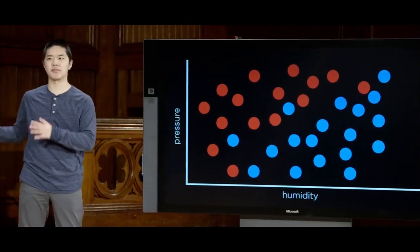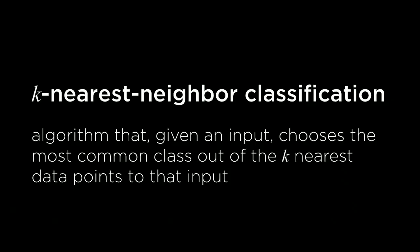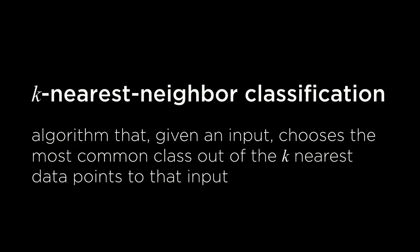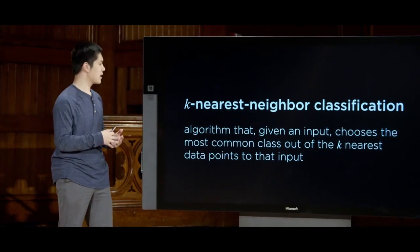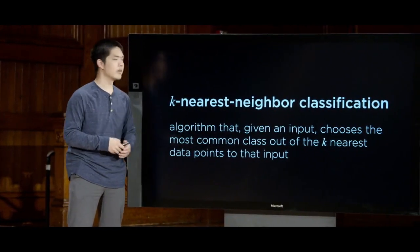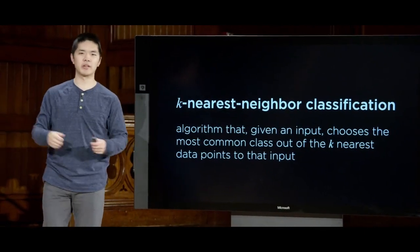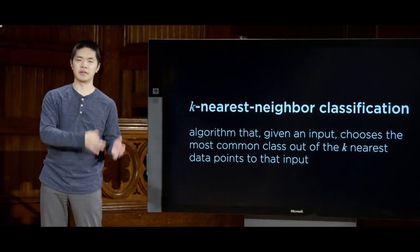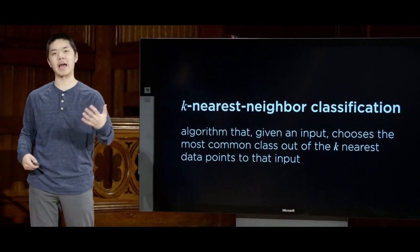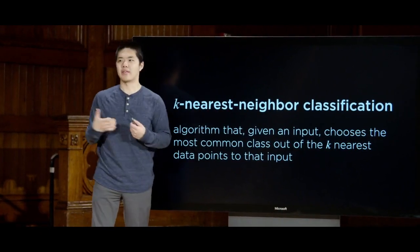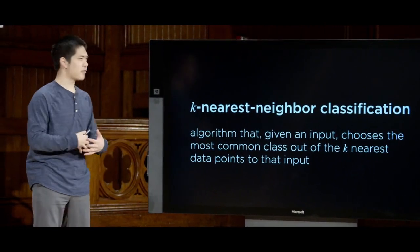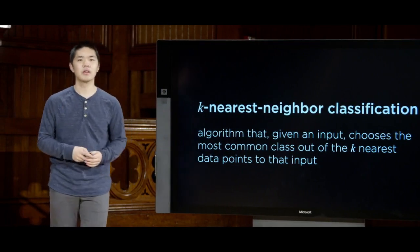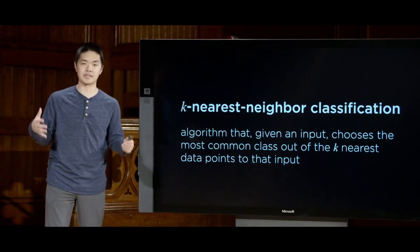There's a variant on nearest neighbor classification known as the k-nearest neighbor classification algorithm, where k is some parameter for how many neighbors we're going to look at. With one nearest neighbor, you just pick the one nearest neighbor and use that category. But with k-nearest neighbor classification — where k might be 3, 5, or 7 — you look at the k closest data points to that point. This algorithm will choose the most common class out of those k nearest data points. If you look at the 5 nearest points and 3 say it's raining and 2 say it's not, you go with the 3 — each one effectively gets one vote.